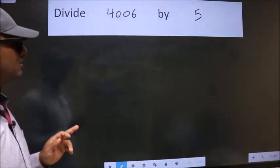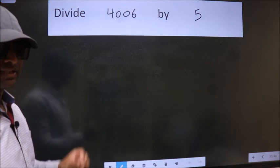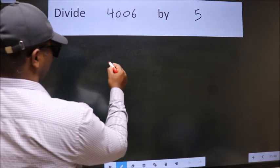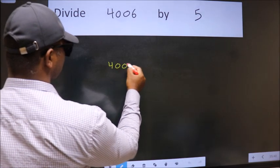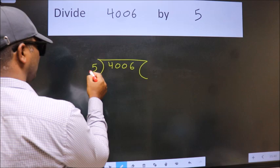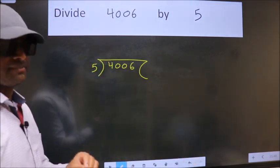Divide 4006 by 5. To do this division, we should frame it in this way: 4006 here, 5 here. This is your step 1.